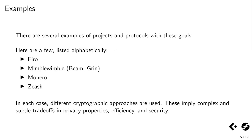There are definitely examples of other projects and protocols that try to achieve similar goals. There are approaches like Mimblewimble, implemented in projects like Beam and Grin. Monero is a popular example, as is Zcash. It's interesting to note that in each case, including with Spark, there are different cryptographic approaches used toward very similar goals. It's also important to note that these often imply fairly complex and sometimes subtle trade-offs in privacy properties, efficiency, and security.